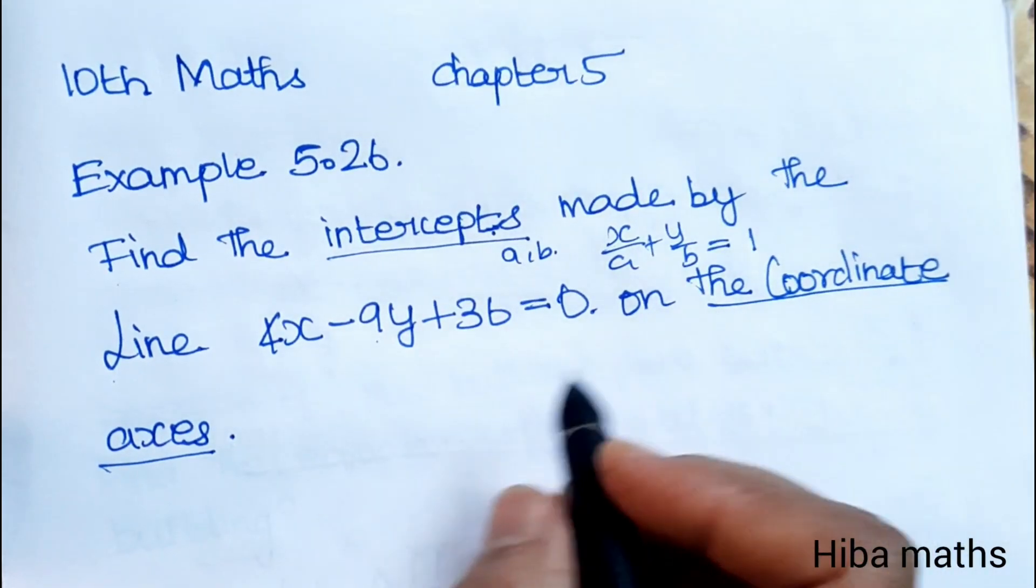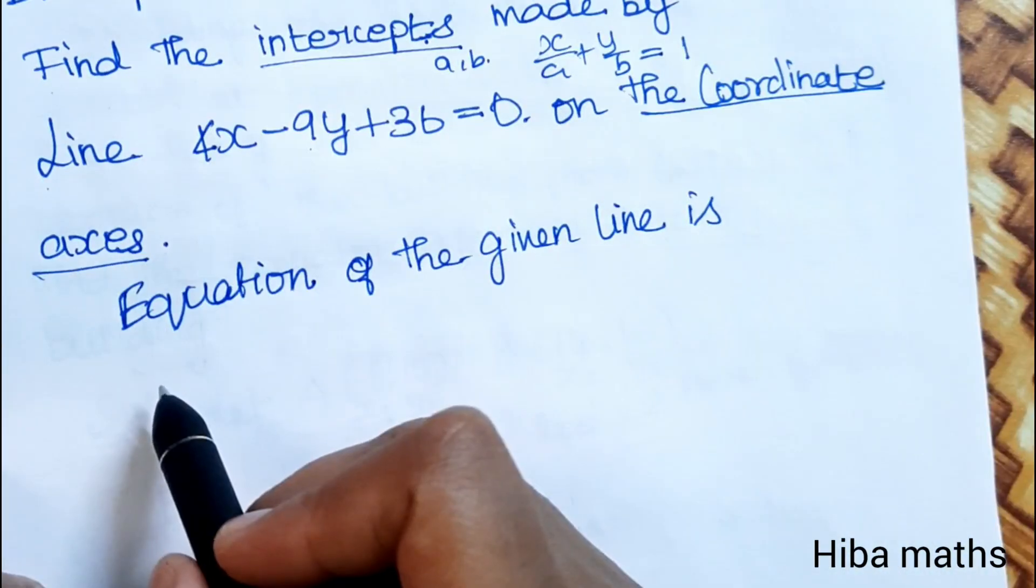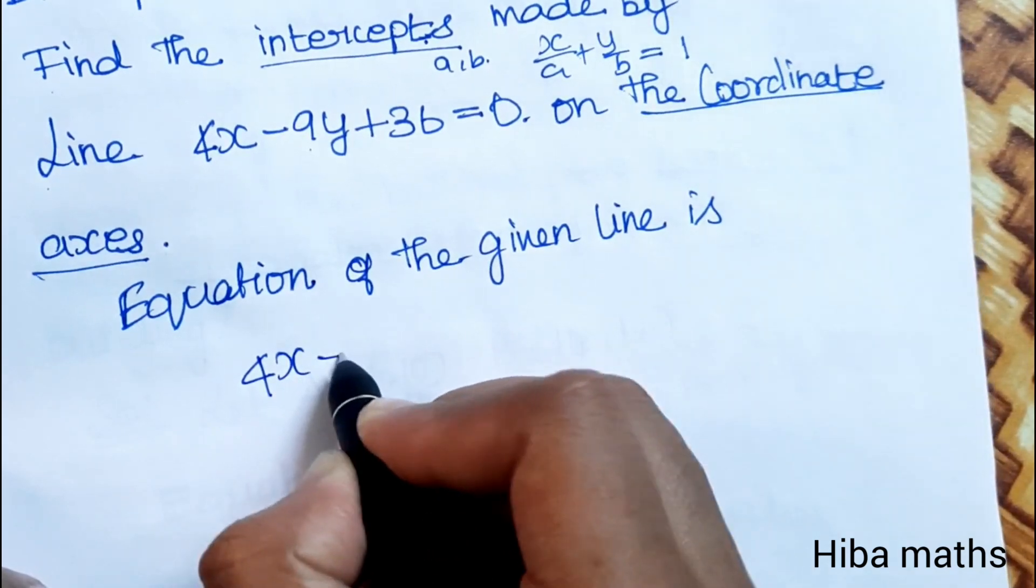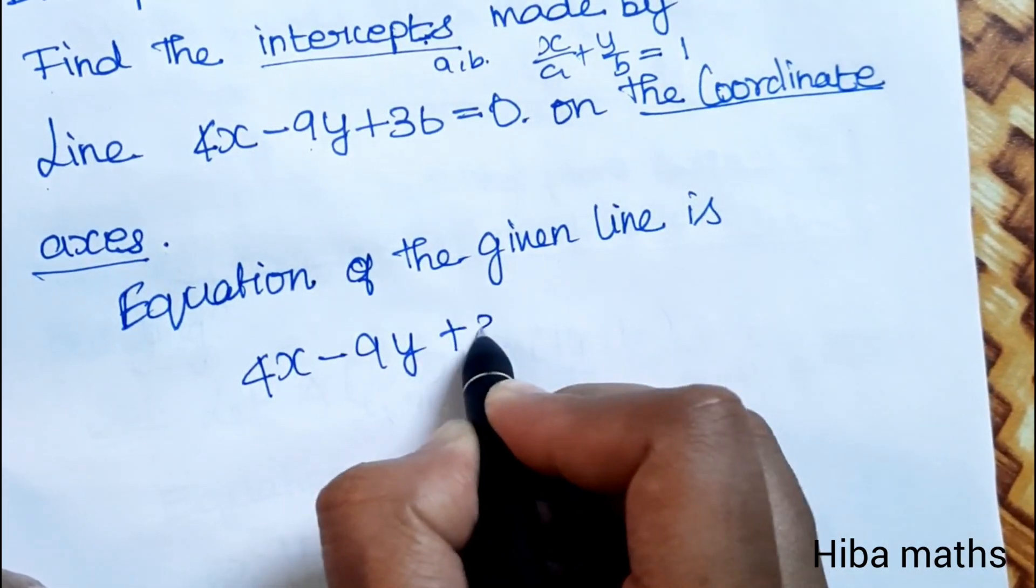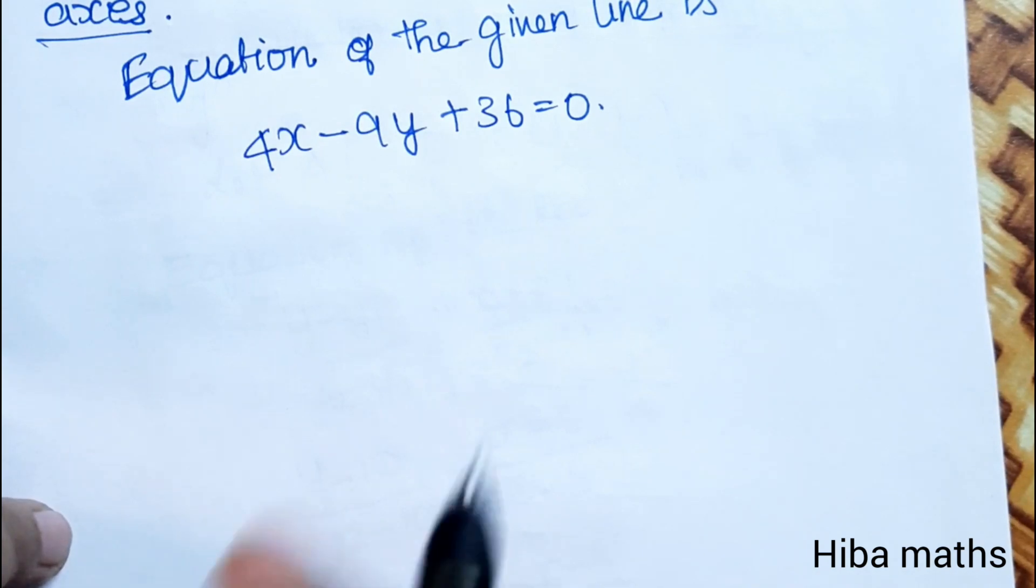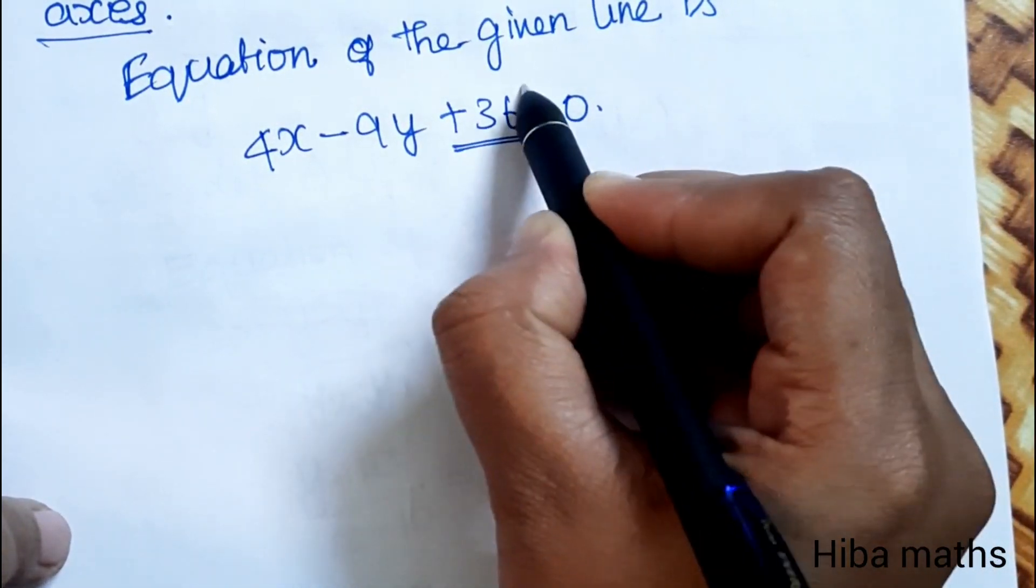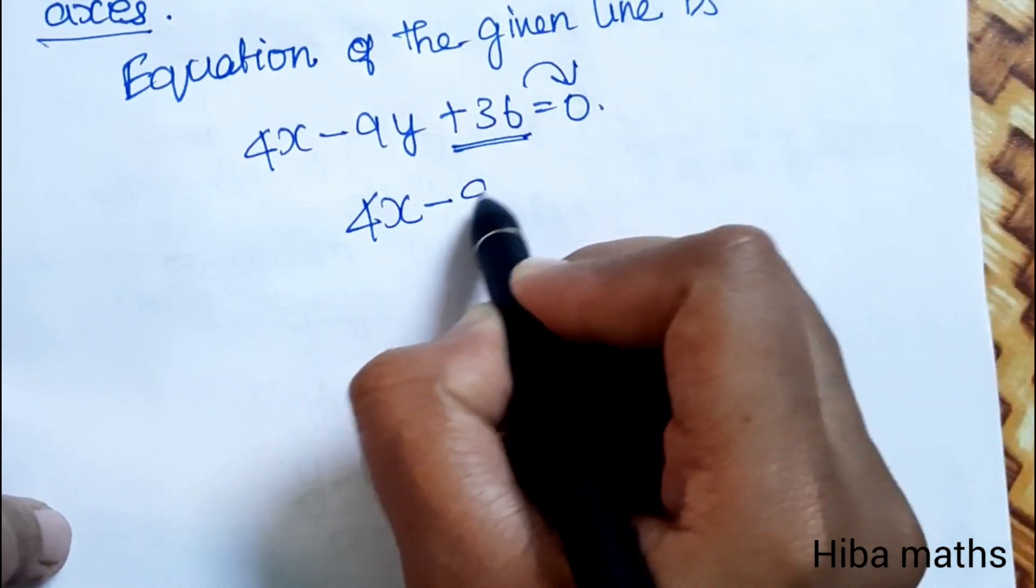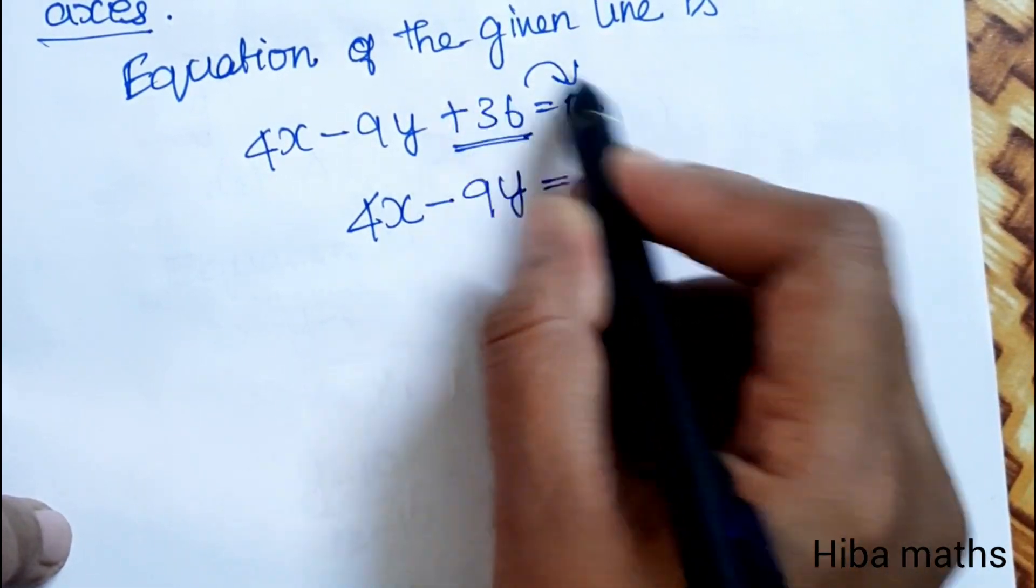The equation of the given line is 4x minus 9y plus 36 equal to 0. First, we move the constant to the other side, so 4x minus 9y is equal to minus 36.